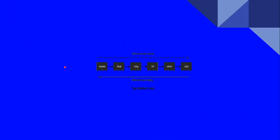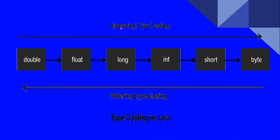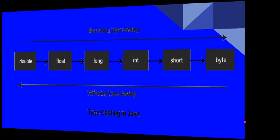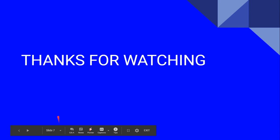As shown in the diagram, narrowing typecasting goes from double towards byte, while widening typecasting travels from byte towards double. This typecasting should be done carefully in order to avoid any loss of data when converting from one type to another. That is all — thanks for watching.